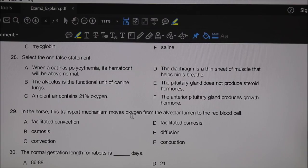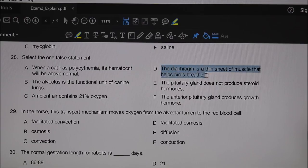Twenty-eight is interesting: the one false statement. You've got to look through all of them and see which one you think is false. The diaphragm is a thin sheet of muscle that helps birds breathe—oops, the diaphragm doesn't exist in birds.